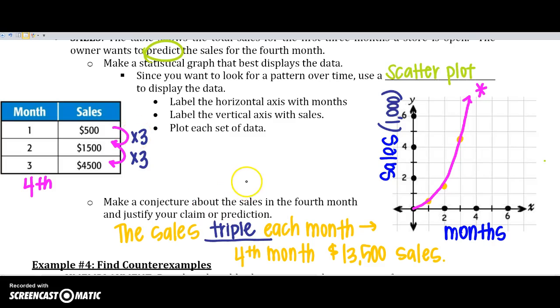So, maybe my conjecture says the sales triple each month. Or you could say multiply by three. So, the fourth month would be $4,500 times three, which would give me $13,500 in sales, which would be way up here somewhere. So, our prediction was pretty good, and we used that graph to help us predict where it might be.